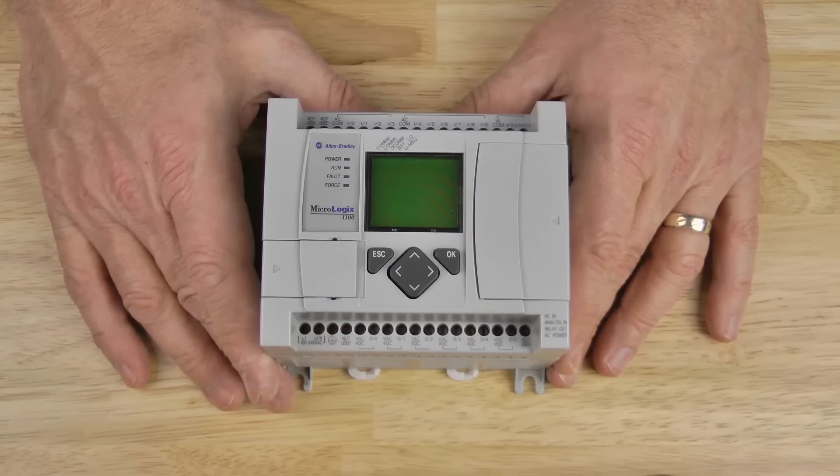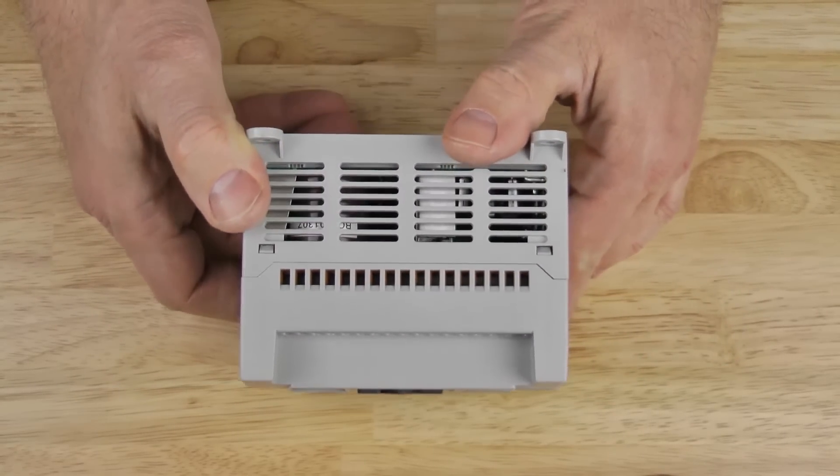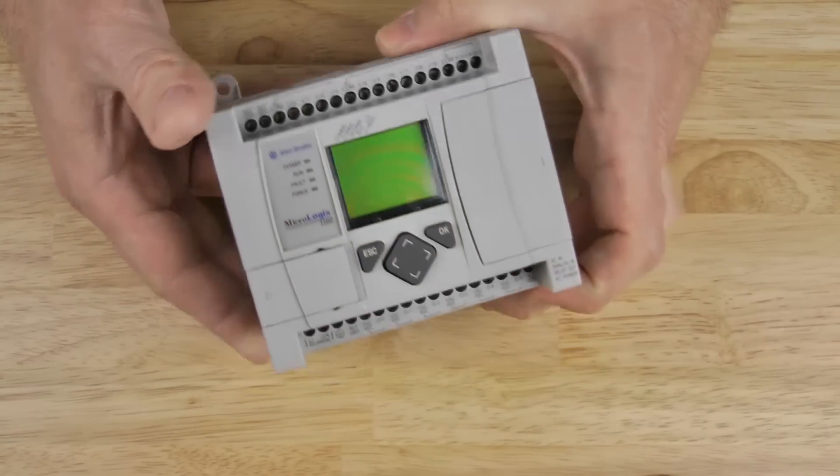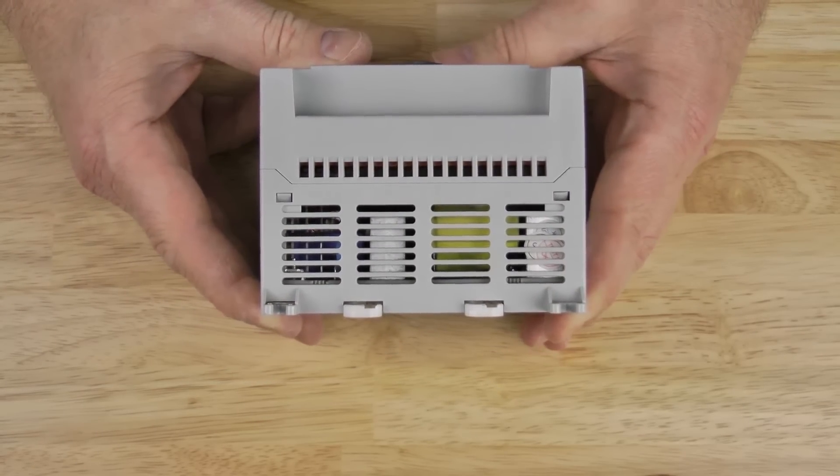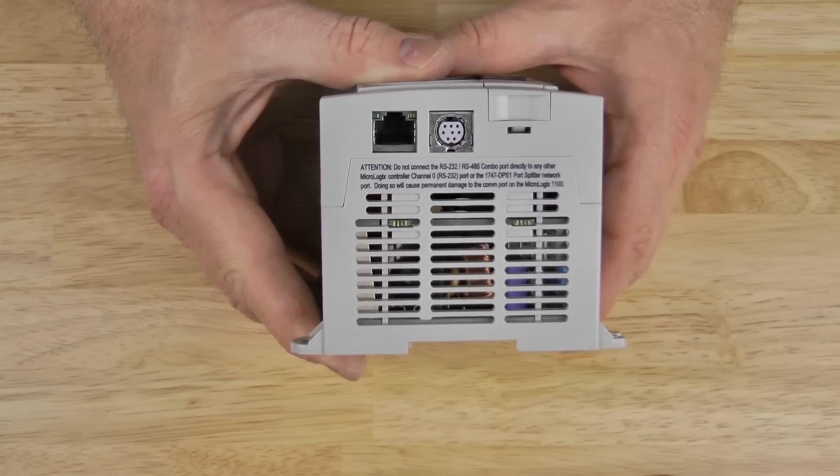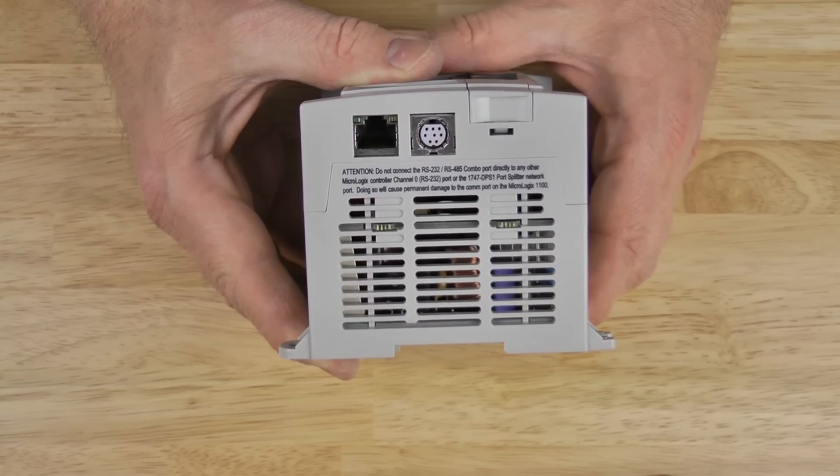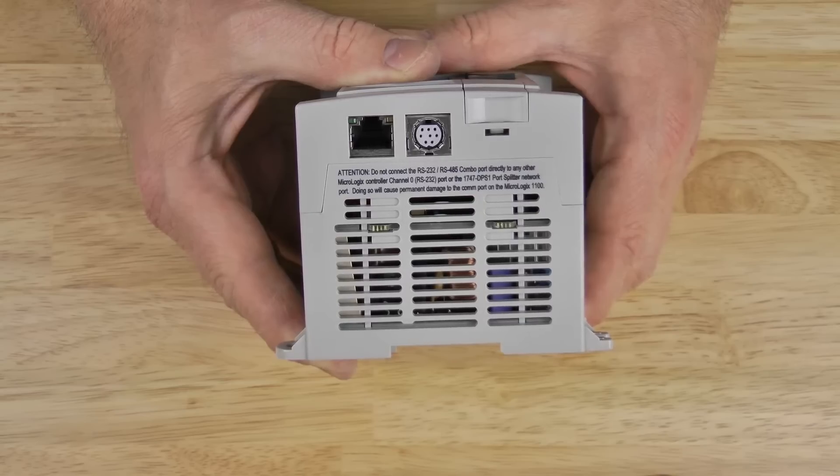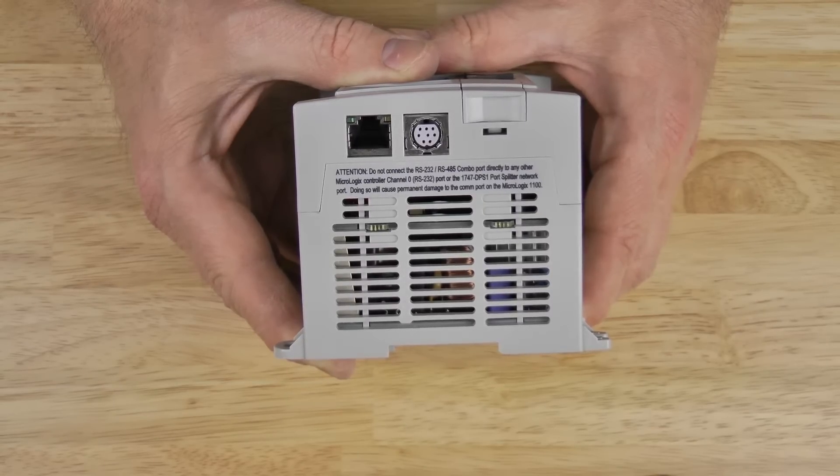Now let's look at the top and bottom of this unit. You can see it's vented to allow for heat dissipation. On the left-hand side we see the RJ45 jack for Ethernet as well as the mini DIN serial port, with more venting here as well.